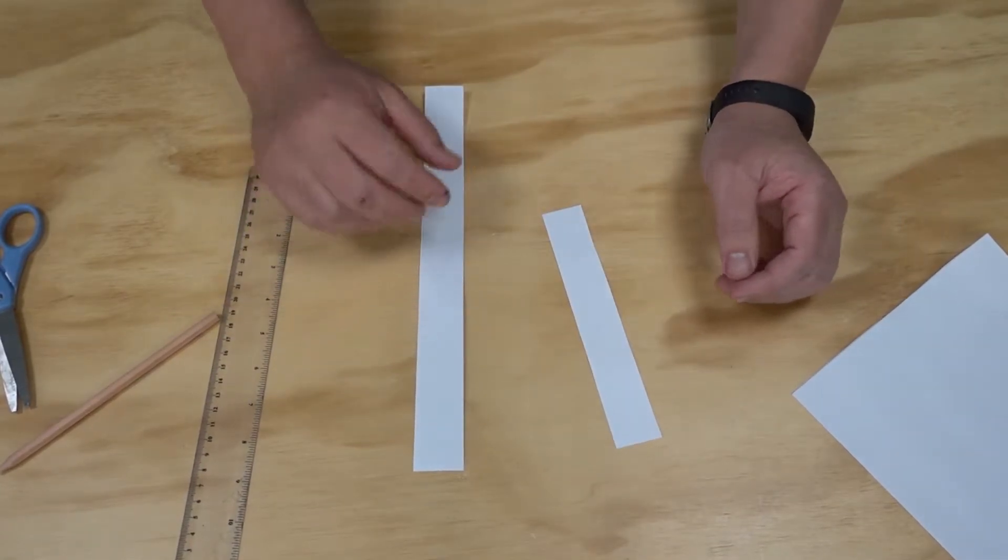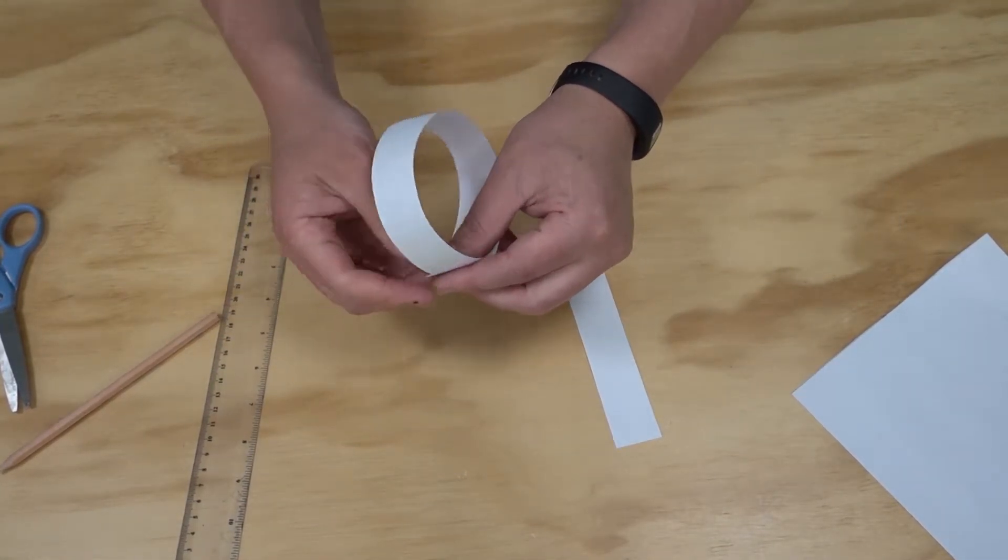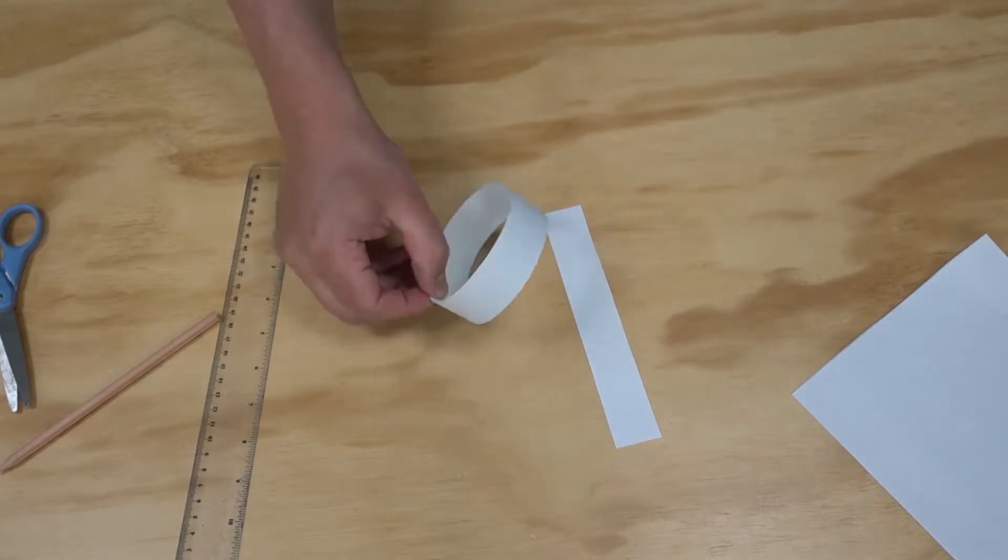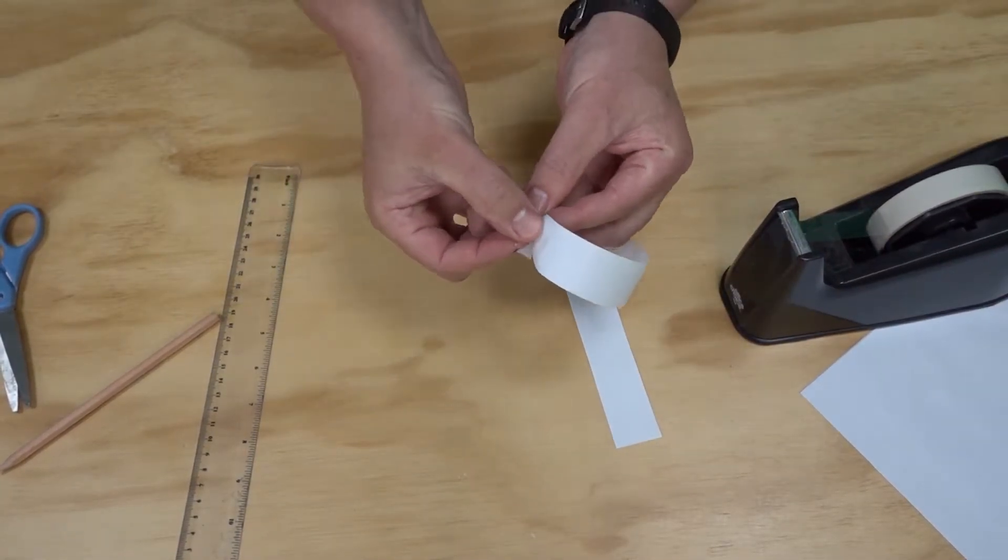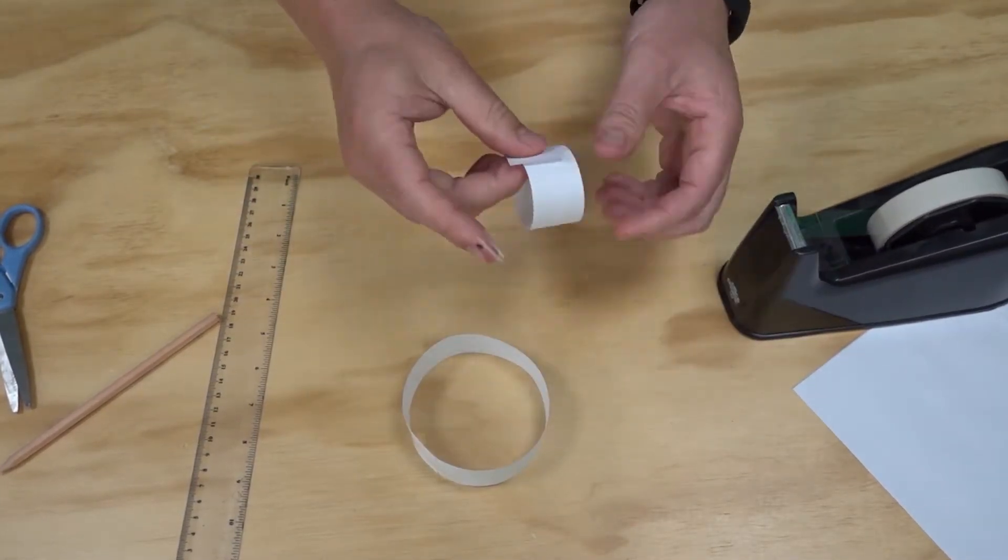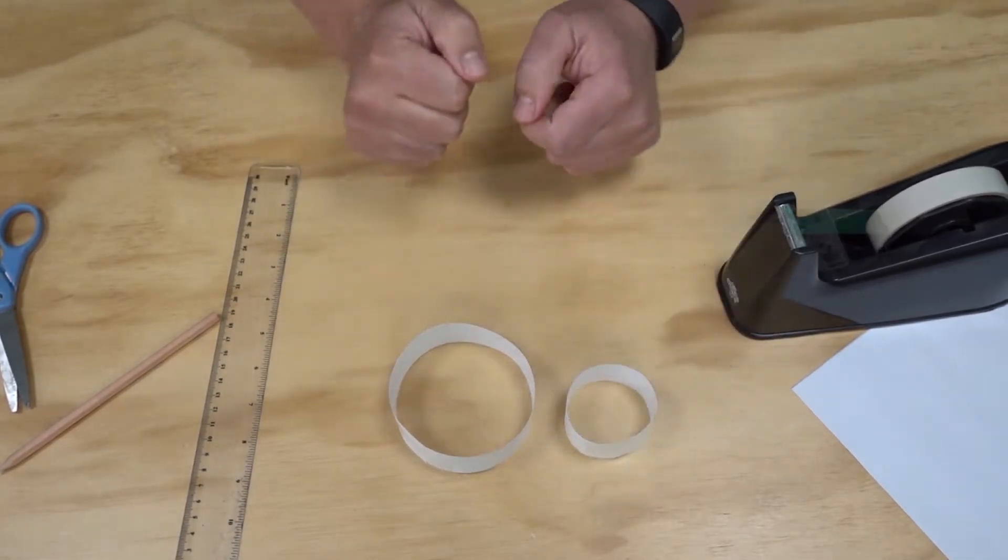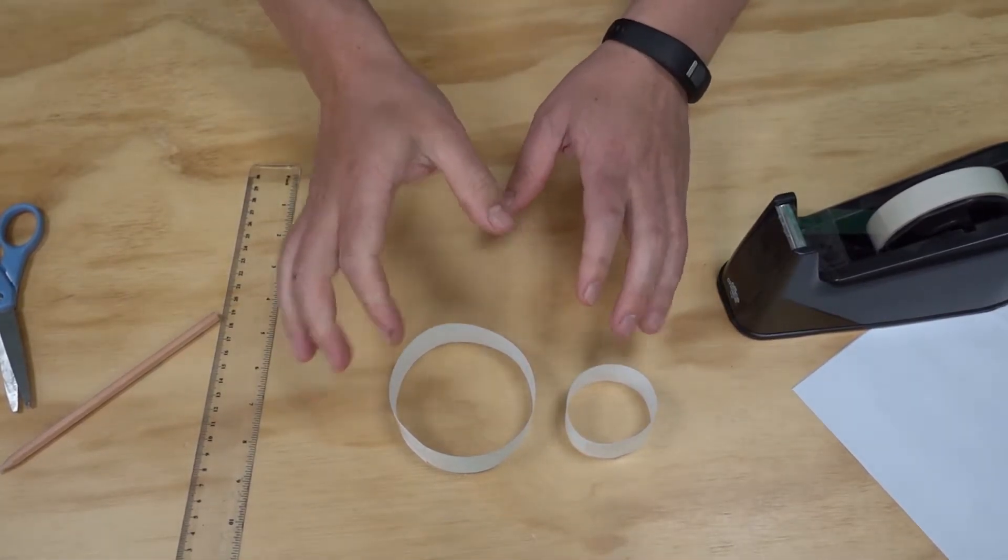To secure my two loops, I'm simply going to roll them around, grab a piece of tape, and tape them into a ring. As you can see, I've now got two rings of different sizes.